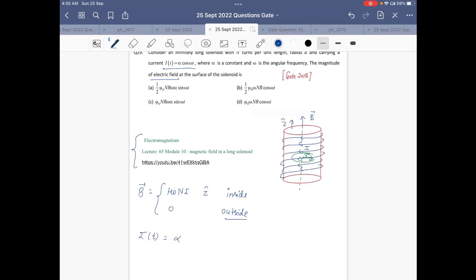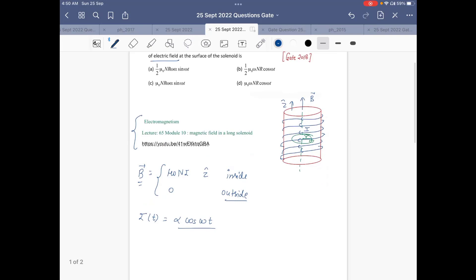Now our current I(t) is changing with time, given by α cos ωt. So basically our current is changing, and so is our magnetic field.